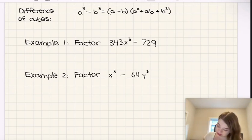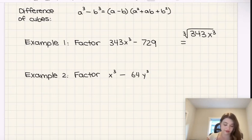So first let's find the cube root of 343x cubed. Well the cube root of 343 is 7, because 7 cubed is 343. And then the cube root of x cubed would just be x, so therefore a is equal to 7x in this case.